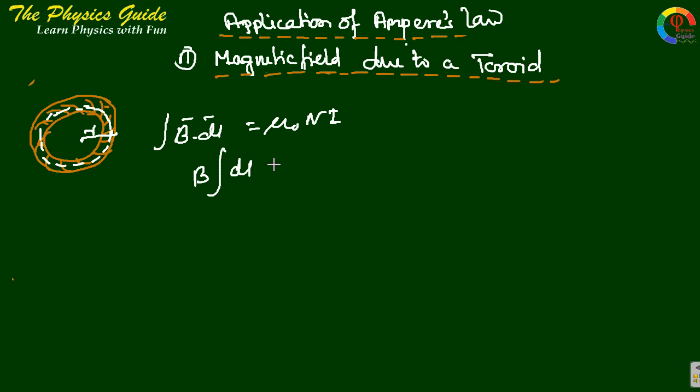So B·dl gives B∫dl = μ₀N, and ∫dl from 0 to 2πR. So B·2πR = μ₀N, that is B = μ₀N/(2πR).